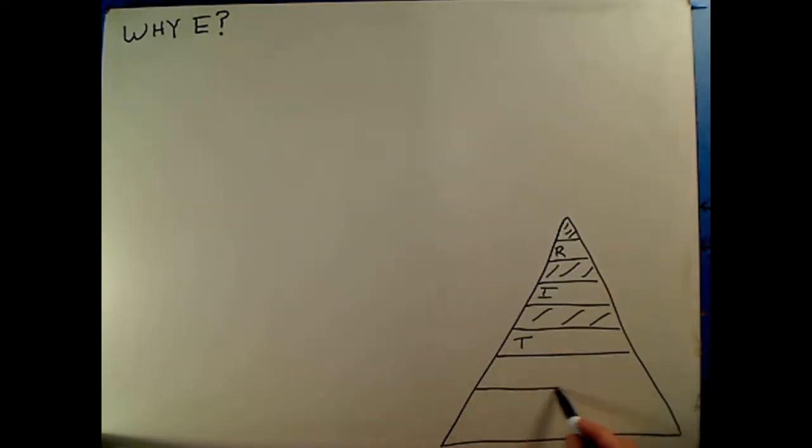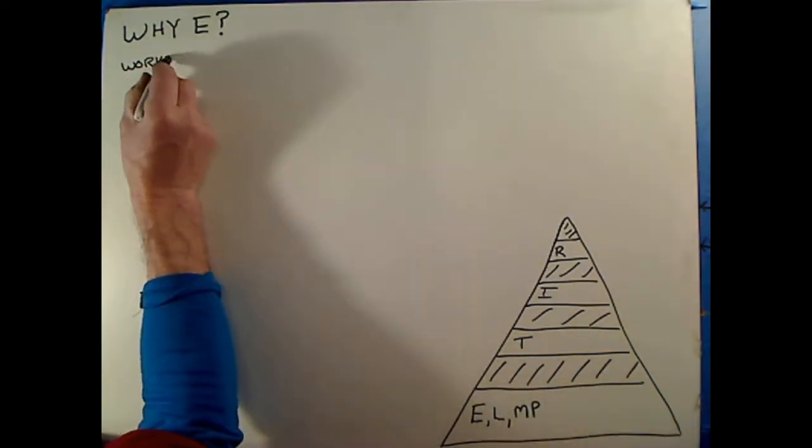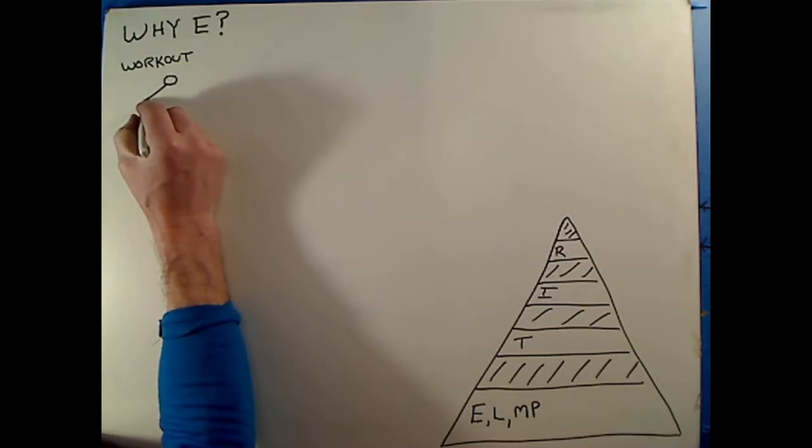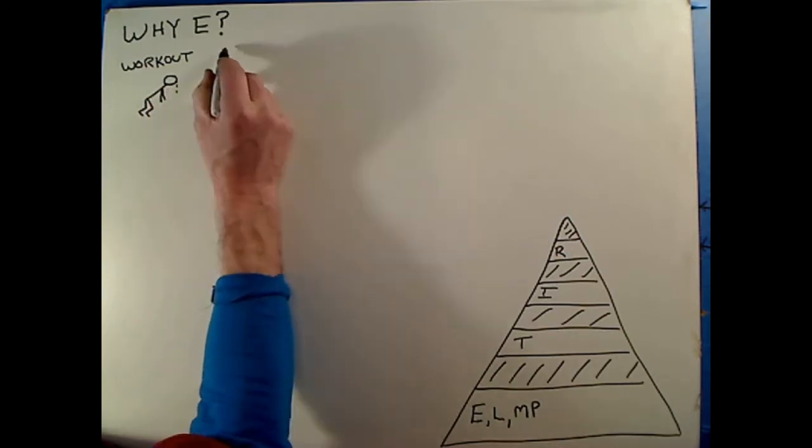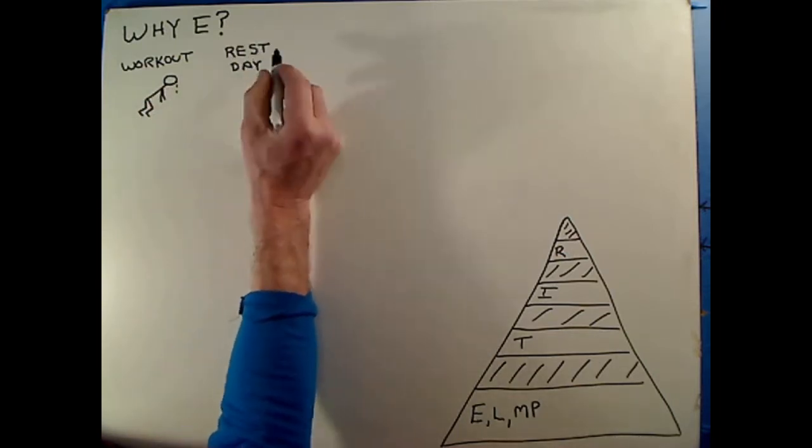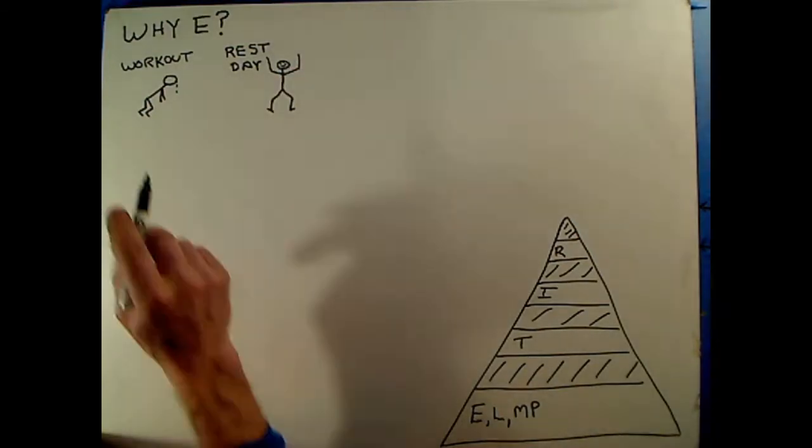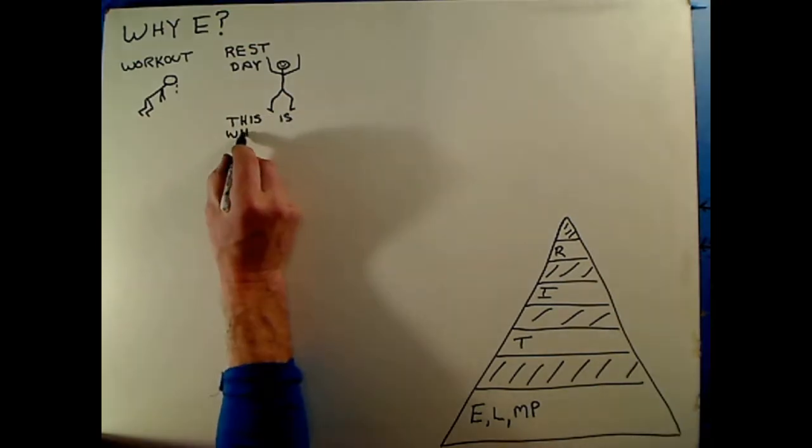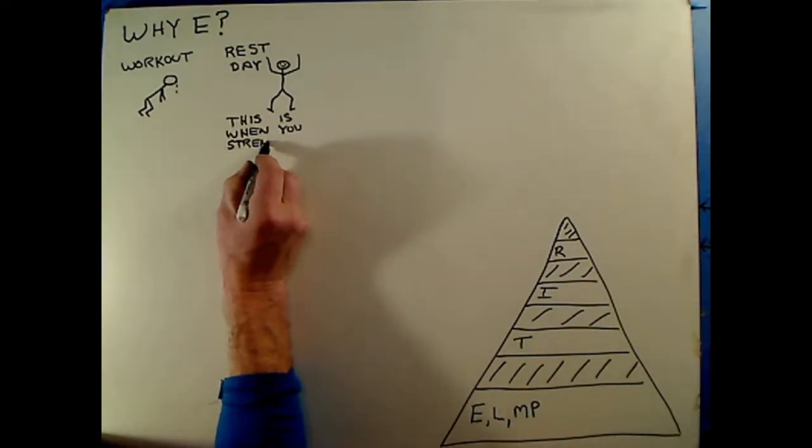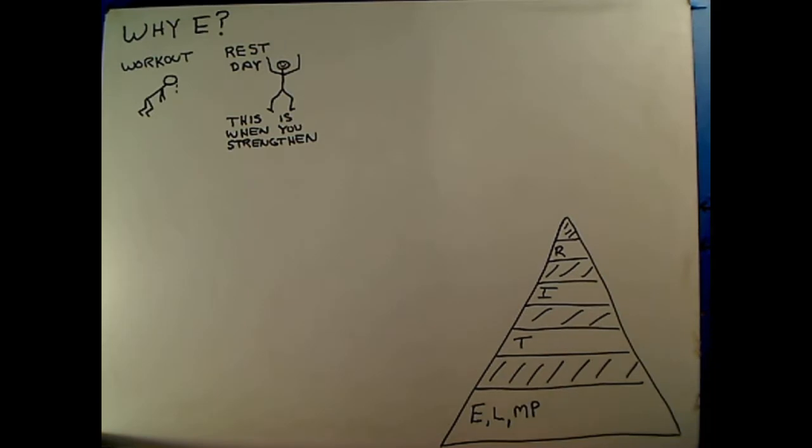The reason we do E is because during easy running is when we get stronger. At the end of a workout, you get really tired, right? And then the rest period is when you get stronger. You know that. You feel better. So you strengthen when your muscles are allowed to move easily and build themselves up stronger. You don't strengthen when you beat yourself to a pulp on work days.